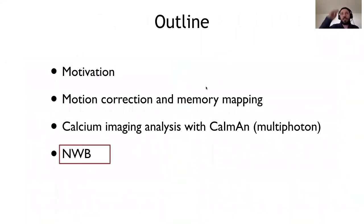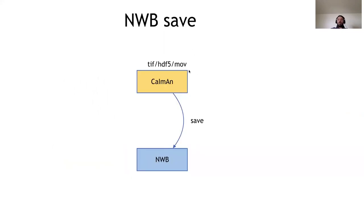So is everything clear so far in terms of the inner working of CaImAn to perform analysis of multi-photon imaging? And then there will be a demo, of course, so there will be also chance to discuss more in details. You seem to be okay. I'm going to go now on the NWB integration. So CaImAn has implemented a set of functions that enable it to interact bidirectionally with the neurodata without borders file format.